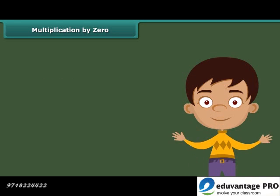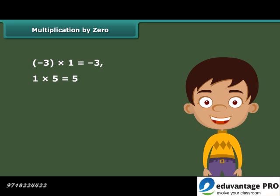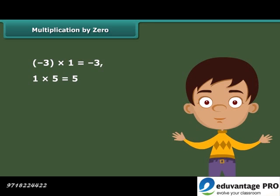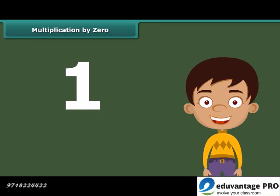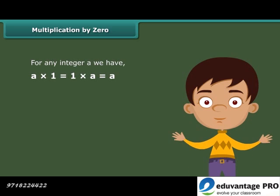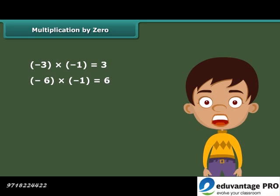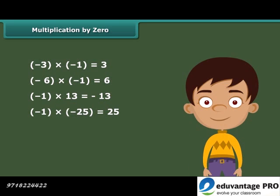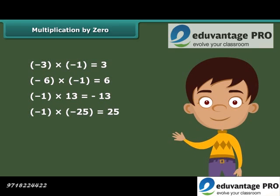When we multiply 1 with any integer, we get the same integer. For example, minus 3 into 1 is equal to minus 3, and 1 into 5 is equal to 5. That means 1 is the multiplicative identity for integers. In general, for any integer A, A into 1 is equal to 1 into A, which equals A. But when we multiply any integer with minus 1, we get the additive inverse of the integer. In these examples, minus 3 has become 3, minus 6 has become 6, 13 has become minus 13, and minus 25 has become 25.